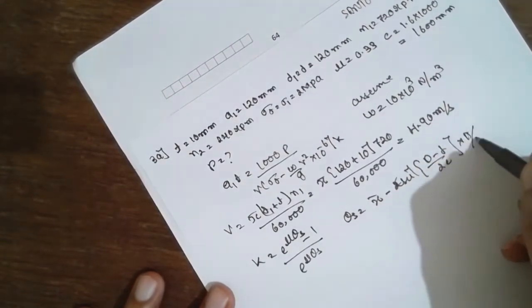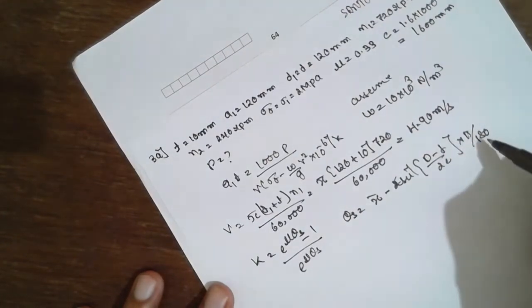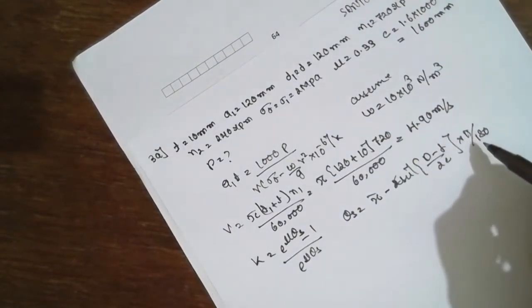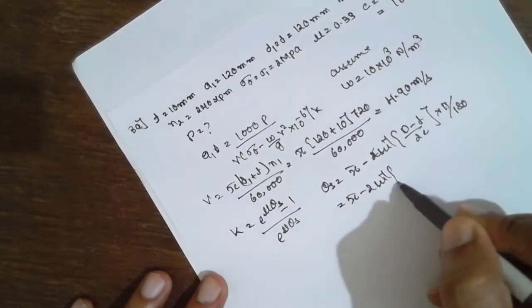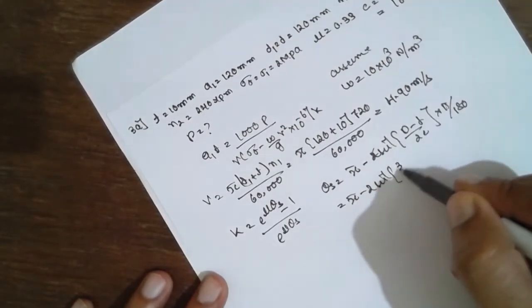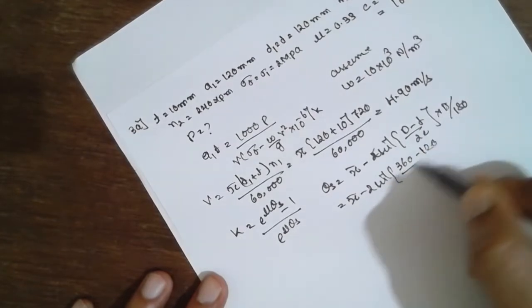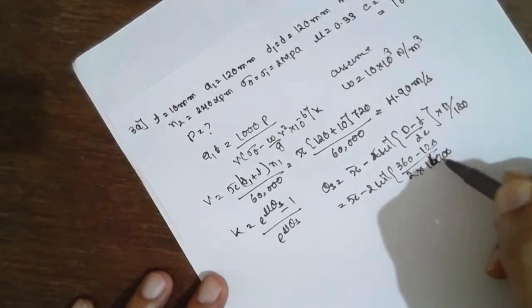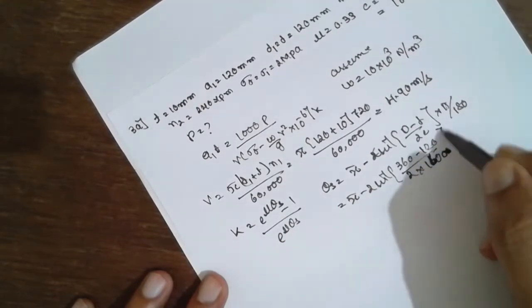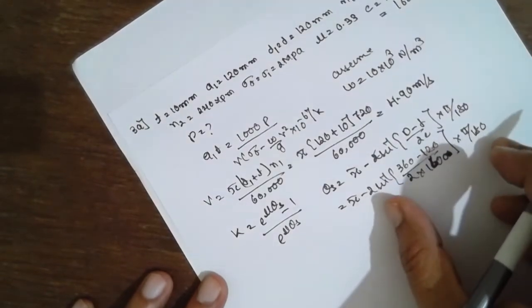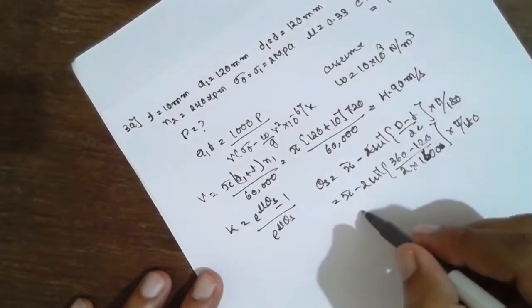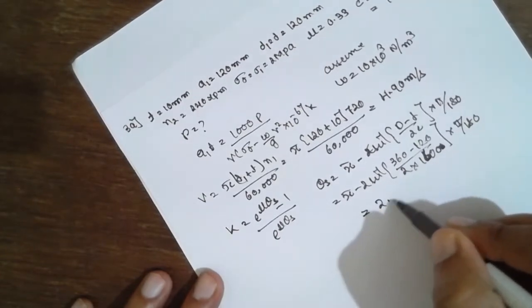If you are calculating in terms of degrees, you have to multiply by π/180. If it is in radian, don't multiply by π/180. Theta_s = (π - 2sin⁻¹((360-120)/(2×1600))) × π/180. First you have to multiply, then subtract. You will get the answer 2.991 radians.